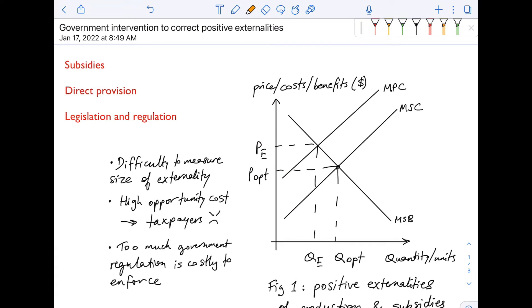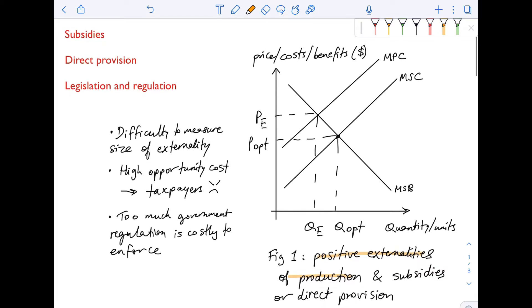Hi everyone, so in this video I'm going to be talking about government intervention to correct positive externalities. I'm going to focus first on positive externalities of production and then I'll talk about positive externalities of consumption.